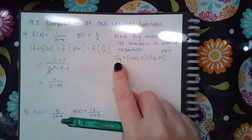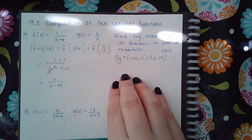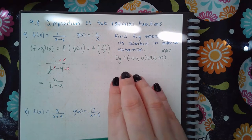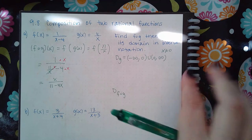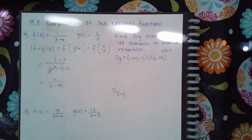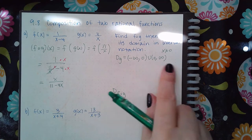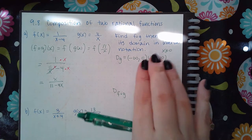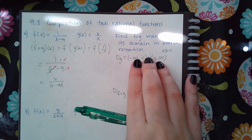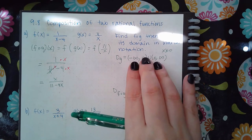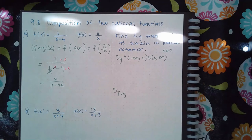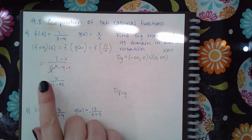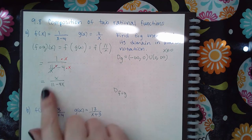This is the potential domain of f of g, with g being the inside function. We always use the inside function because those are the first inputs you start with. Those inputs get plugged into g to get outputs, and then those outputs get plugged into f to get final outputs. So these are the x values that will lead to some outputs of g.